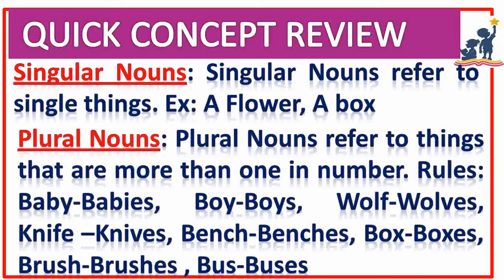Singular noun and plural noun. Singular noun refers to a single thing; for example, a flower or a box. Plural noun refers to things that are more than one in number. There are some rules. For example, baby — when we change singular to plural, baby becomes babies. That is when a consonant is followed by Y, it changes into I-E-S: B-A-B-I-E-S.